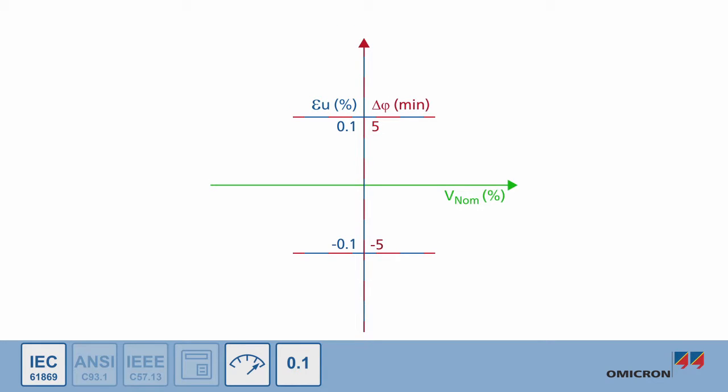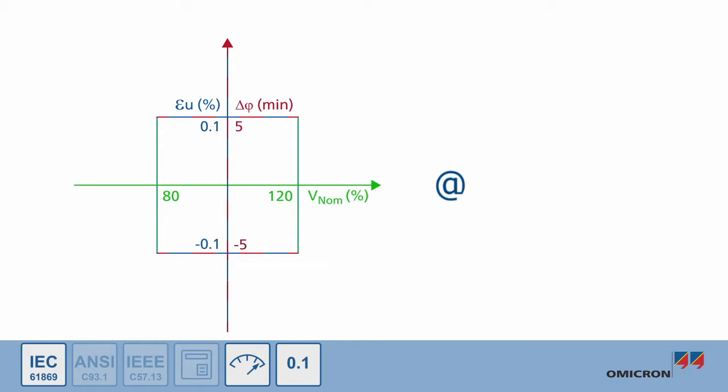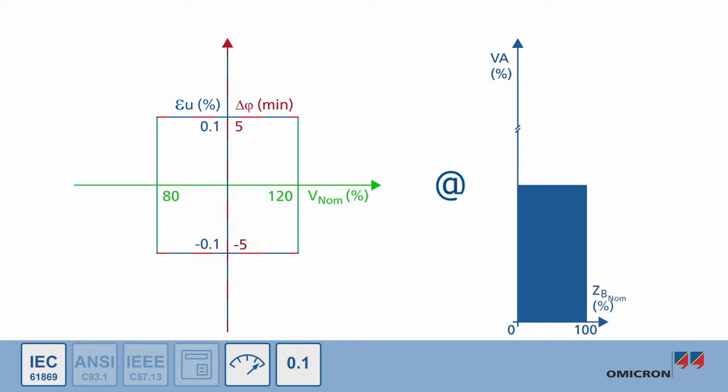The voltage transformer must maintain this high level of precision for primary voltages ranging from 80 to 120% of its nominal voltage. This performance must be maintained for all burdens ranging from 0 to 100% of the nominal burden for unity power factor for burdens below 10VA. For burdens above 10VA, the voltage transformer must be able to maintain this accuracy for burdens ranging from 25 to 100% of its nominal burden at a lagging power factor of 0.8.